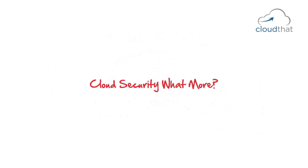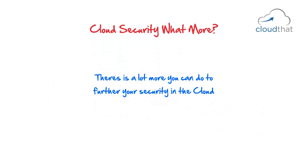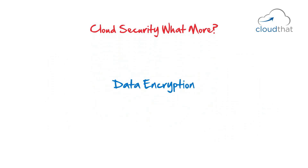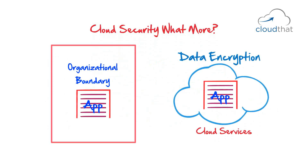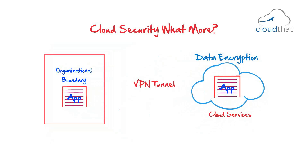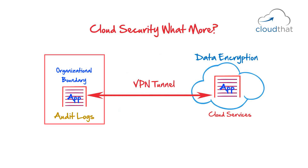Additional security measures: you can encrypt data stored in the cloud or even encrypt it before uploading — many companies encrypt everything that goes into the cloud. A VPN tunnel between your data center and the cloud can further enhance security. You can also keep audit logs of who in your organization is using cloud services, and periodically examine those logs to ensure only proper persons have access to your cloud resources.